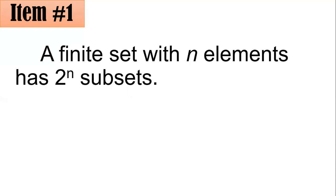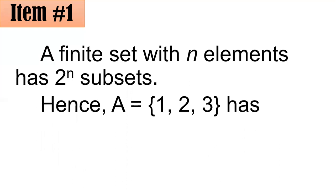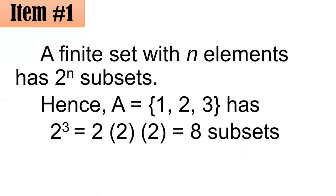Of these two raised to n subsets, it includes elements with no cardinality — 1, 2, 3 — all the way until sets with a cardinality of n, or simply the set itself. So since the given set A has three elements, or it has a cardinality of 3, then we could say that it has 2 cubed, or 2 times 2 times 2, or 8 subsets in all. If you answered letter C, you got it right.